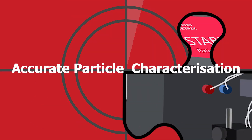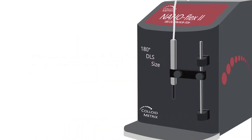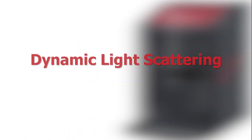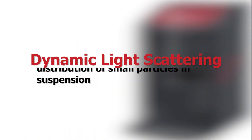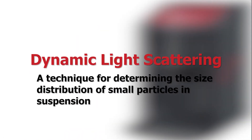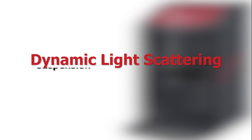This video will outline the benefits of each technique so you can select the ideal instrument for your application and sample type. Dynamic light scattering is a widely used technique for determining the size distribution of small particles in suspension.